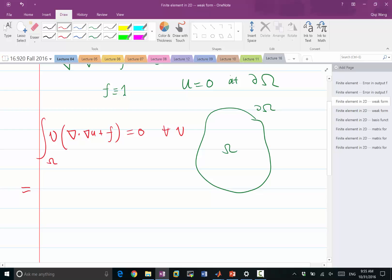So v times the Laplace, which is the divergence of gradient of u, can be integrated by parts. What we get is this divergence operator becomes a gradient operator on v. So we have gradient of v dot gradient of u, integrated over dx. If we have a boundary term, the boundary term is going to be the normal of the boundary dot with gradient of u times v.